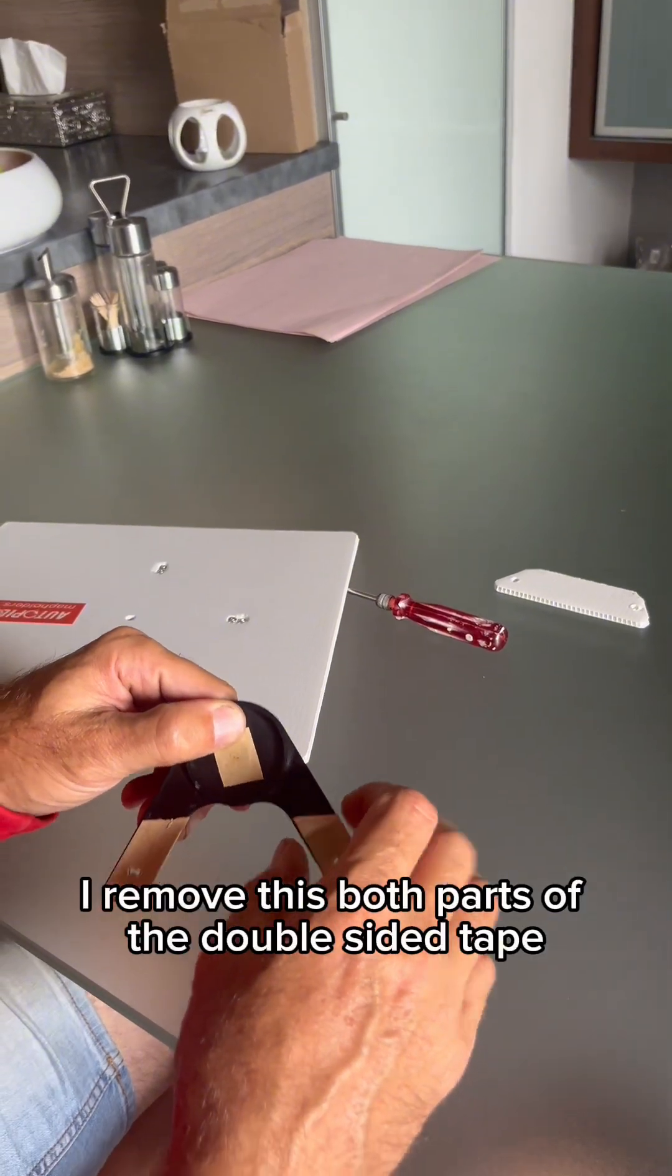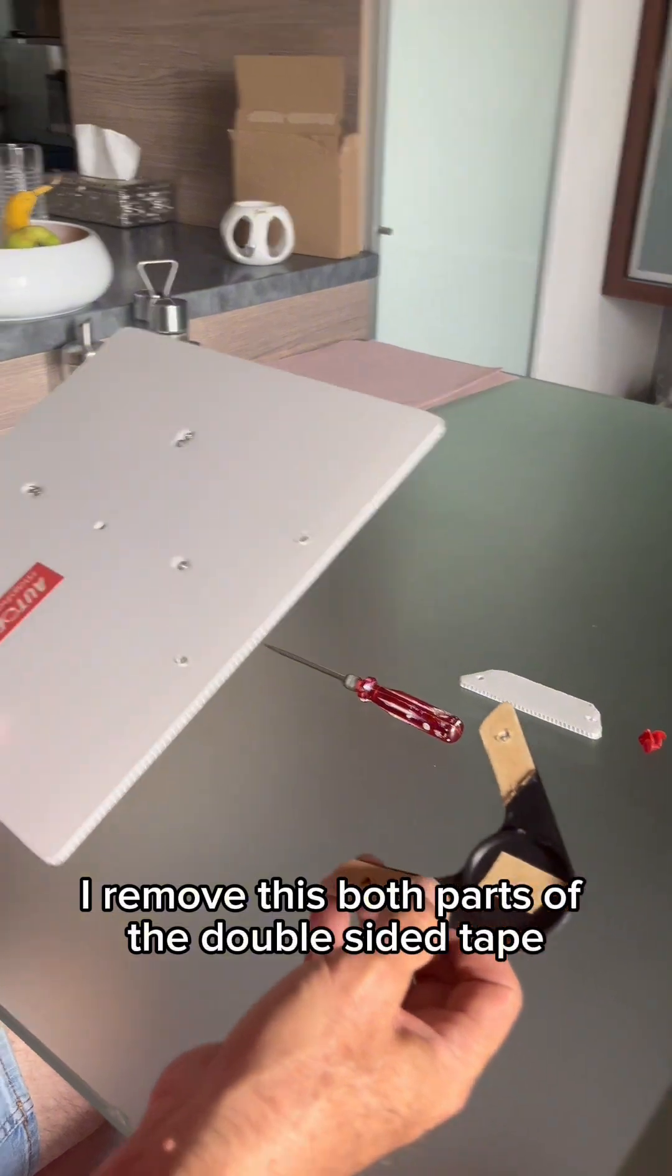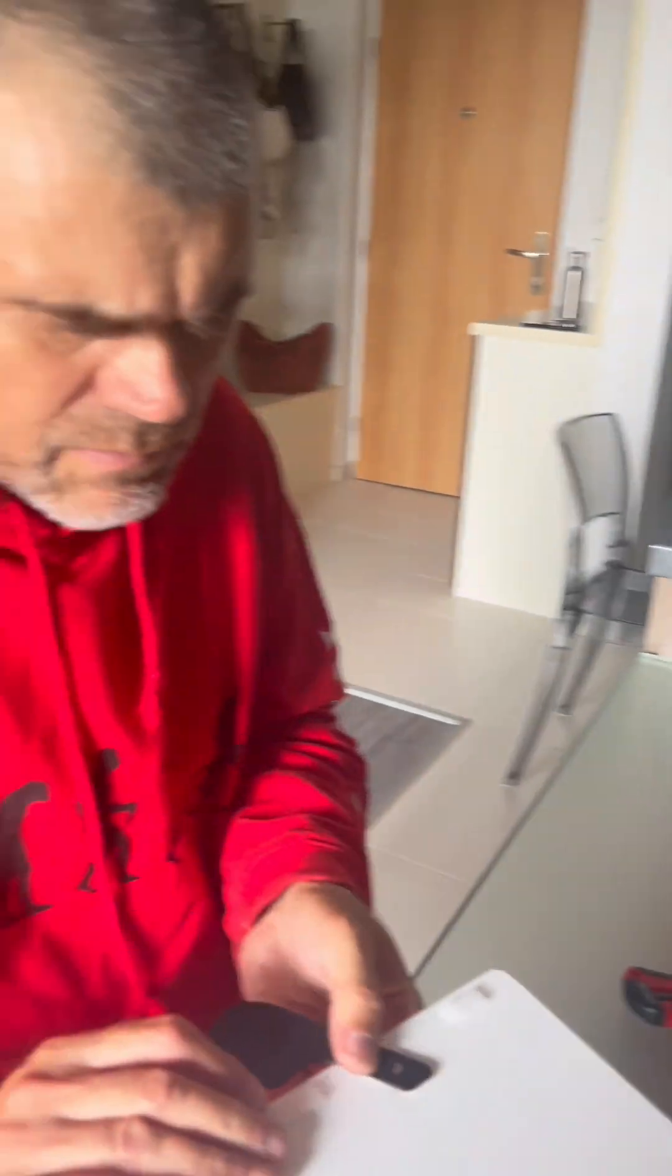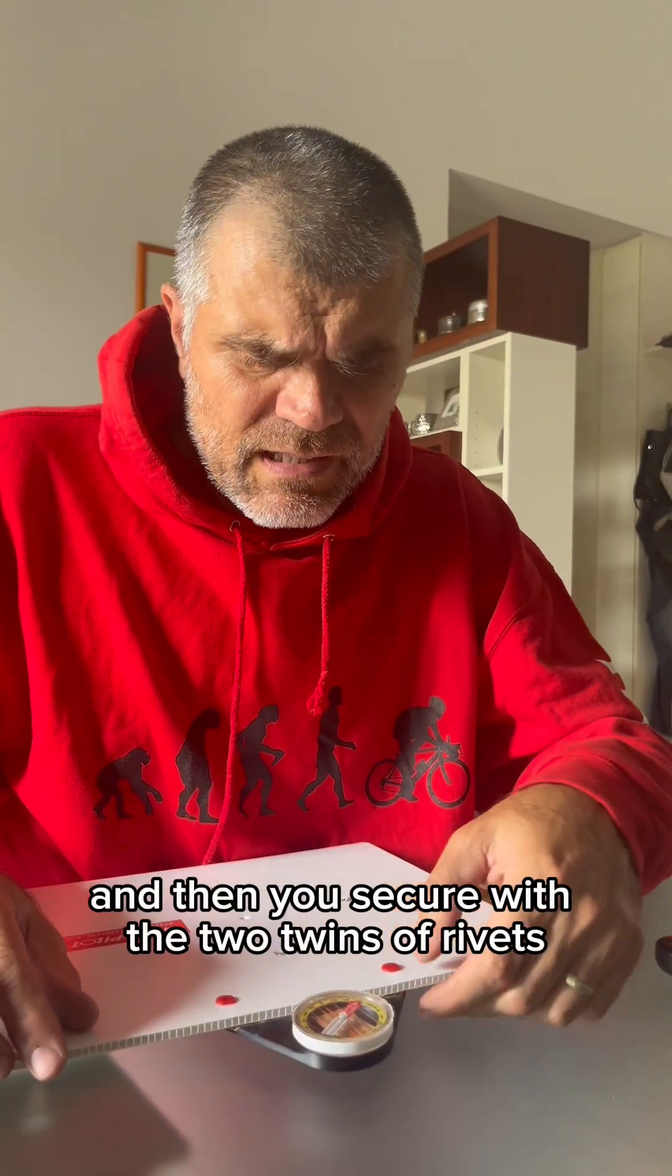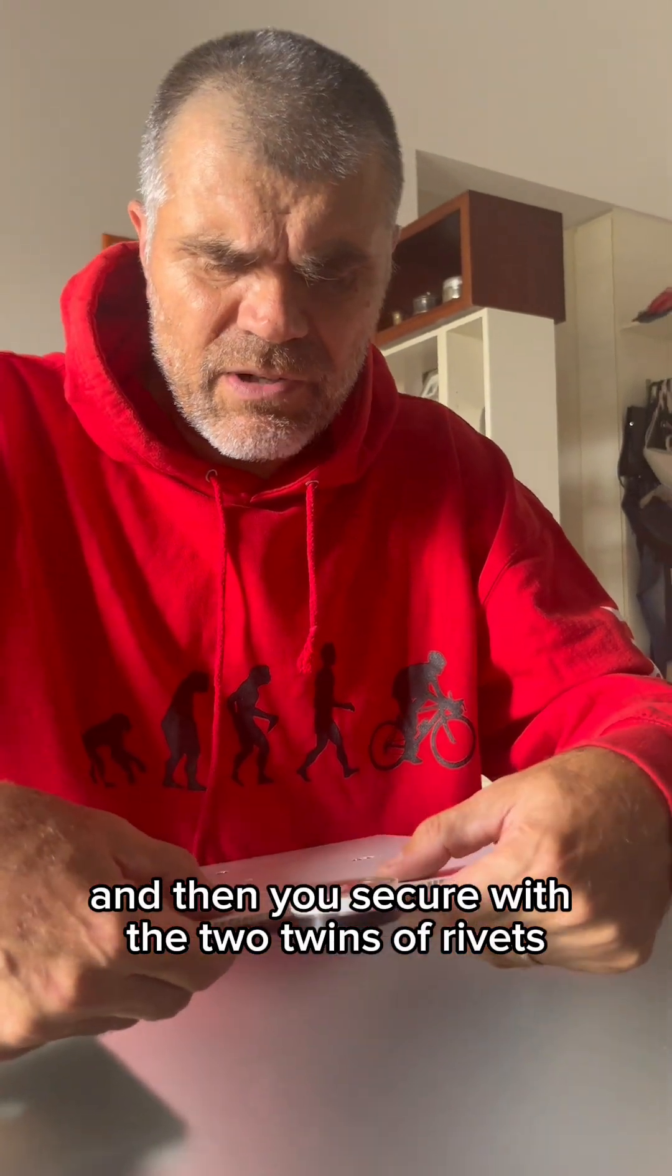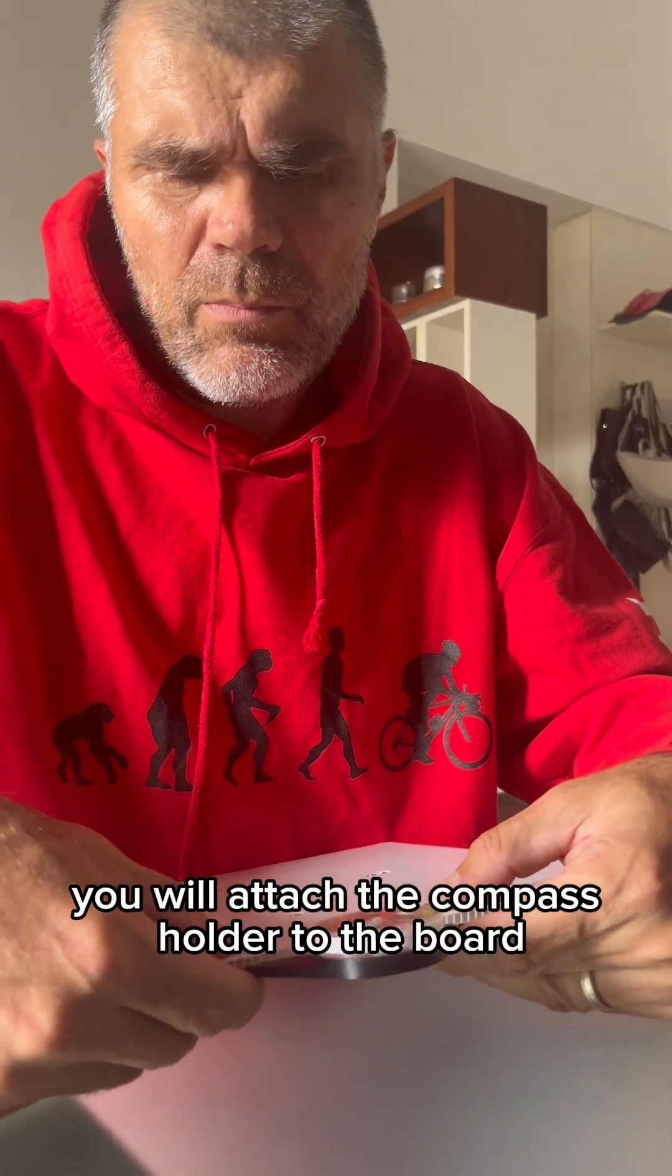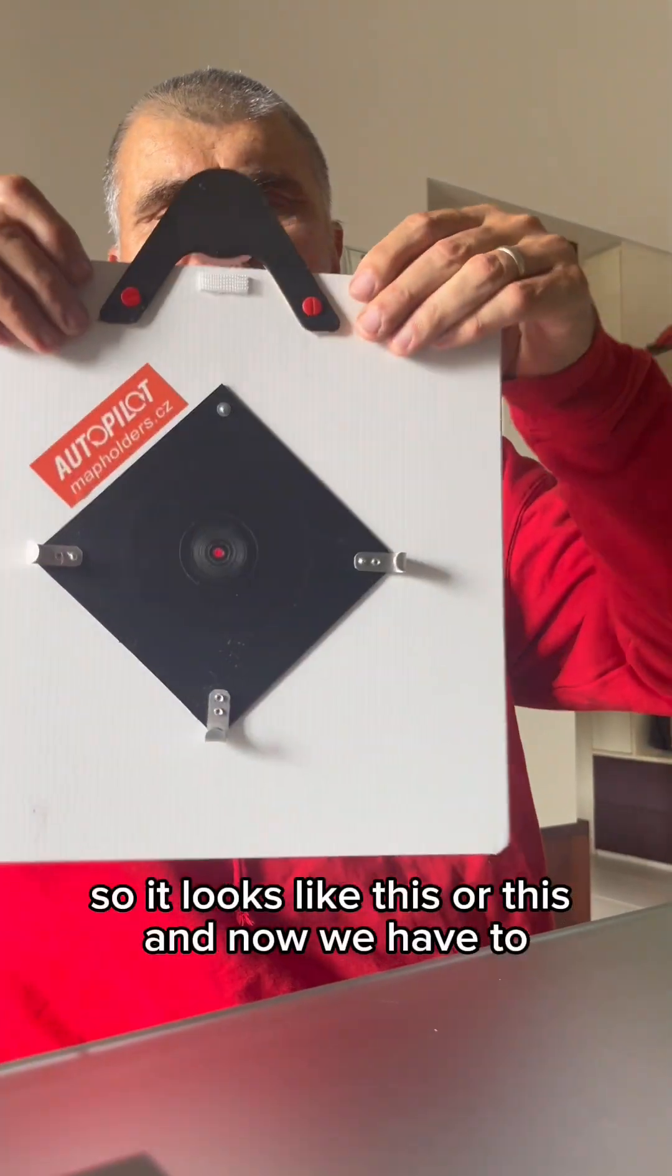If I would like to install it to the board, I remove both parts of the double-sided tape, stick it there, and then secure it with two plastic rivets to attach the compass holder to the board.